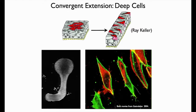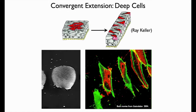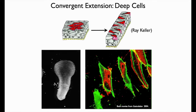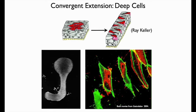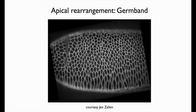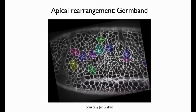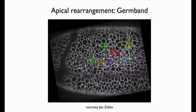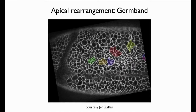That kind of convergent extension is common in deep or non-epithelial cells. Probably the best studied system for rearrangement of epithelial cells, where most of the action is on the apical surface, is the germ band of the Drosophila embryo — this is a really nice movie from Jen Zallen's lab at Rockefeller. Cells in the future epidermis form multicellular rosettes, those clusters resolve, and the entire tissue elongates.